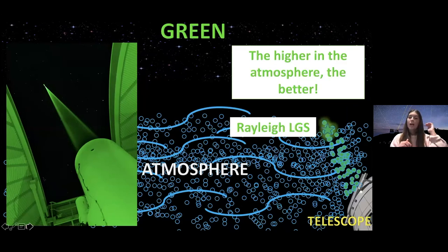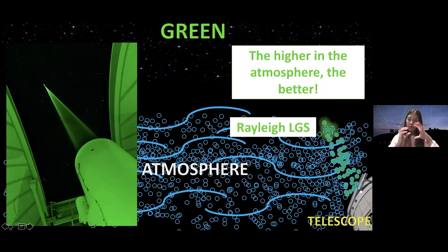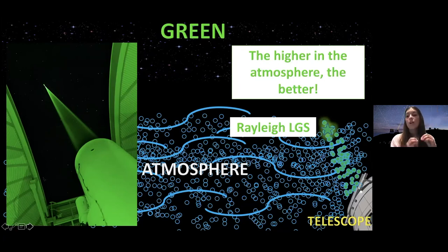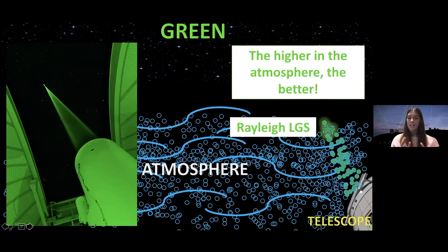We want to place our Rayleigh laser guide star as high in the atmosphere as possible, because we are going to use the light from that small area to measure the turbulence. That light will travel downwards from the illuminated area to our telescope. If we select the area in the middle of the light cone, we are going to miss all the turbulence information above that area. So we want our Rayleigh laser guide star as high as possible. This is our first type — what we call the Rayleigh laser guide star.